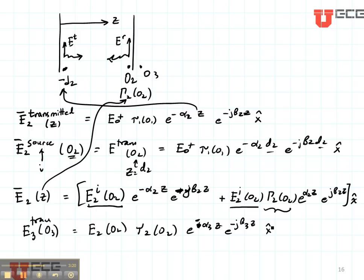As we go through multiple regions, we just calculate the fields using the transmitted field, translating it from minus D2 to O2 and using that as the incident field. Then repeating ourselves over and over until we have all of the regions taken care of.